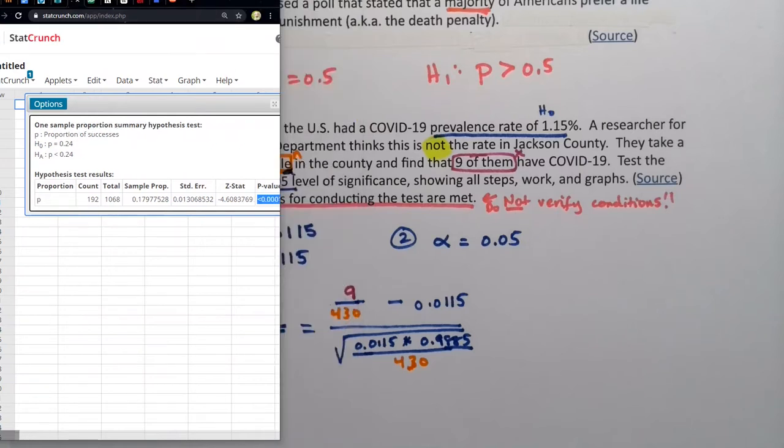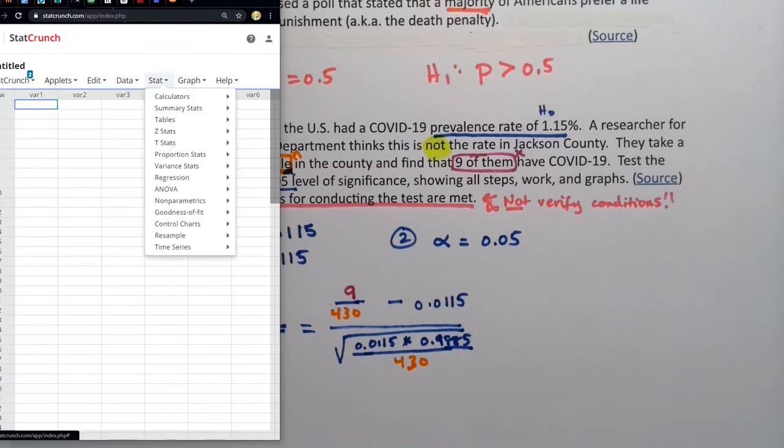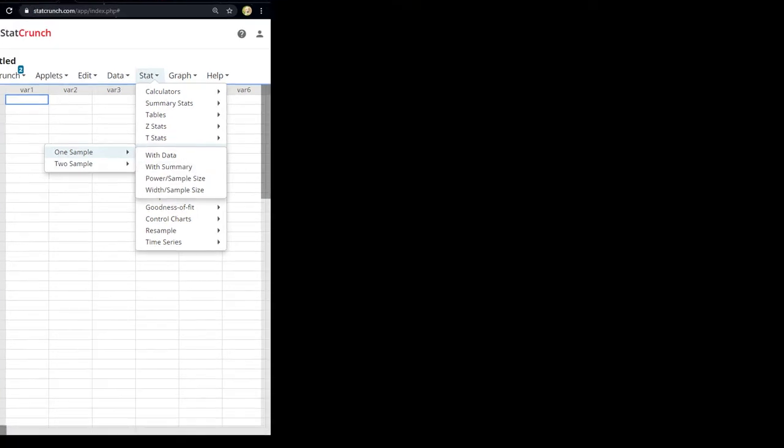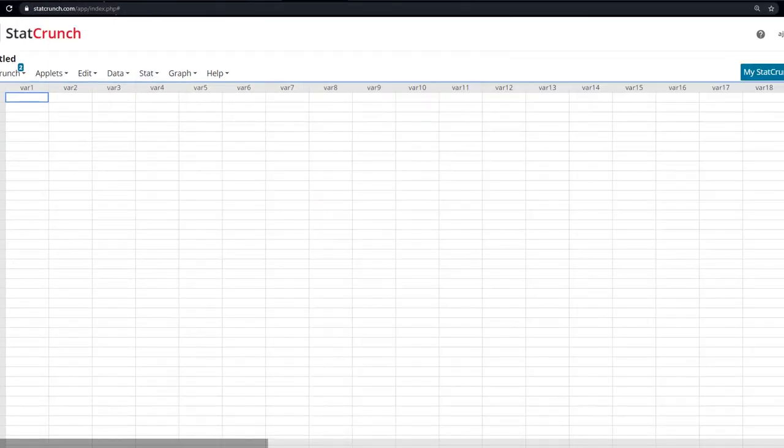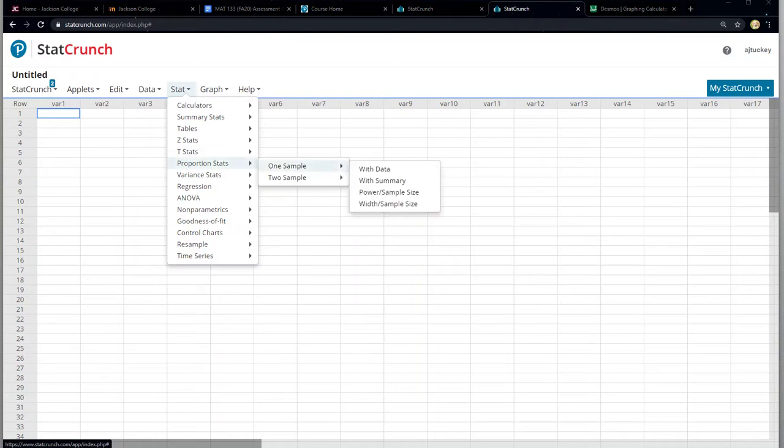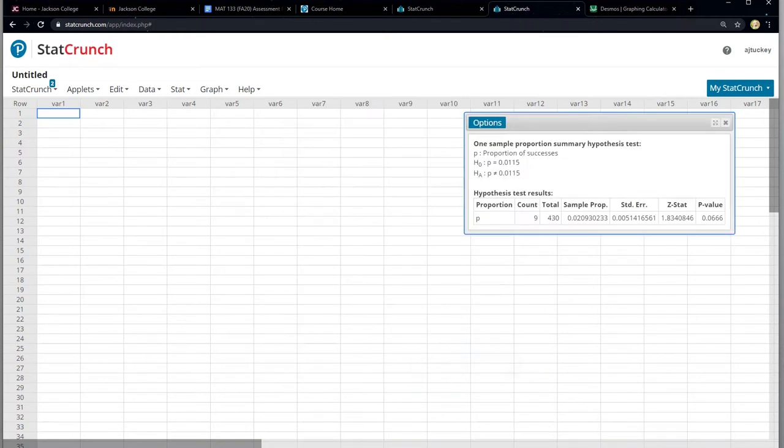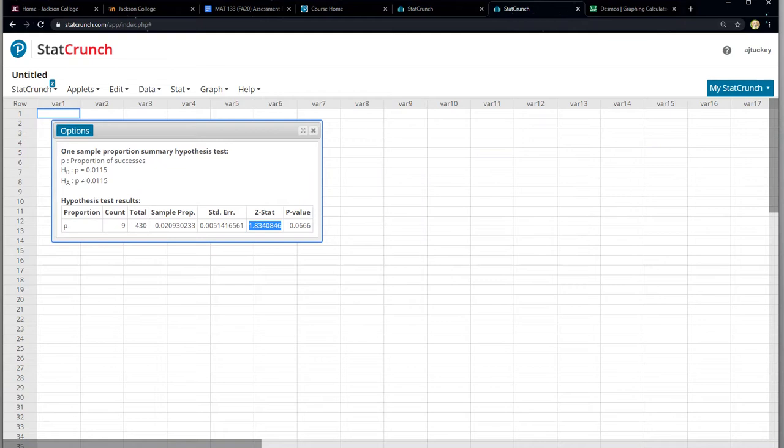In StatCrunch, we click on stat, proportion stats, one sample with summary. Remember, we don't have a data set here. Our number of successes was nine, our number of observations was 430. And we got to type in the decimal here, 0.0115. And then we want to not equal to, so that's perfect. And we will click compute. And there it is. You can see the Z stat is 1.834.